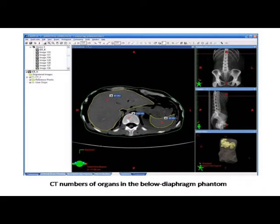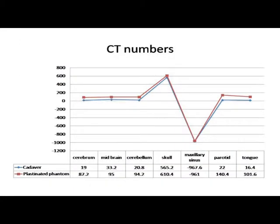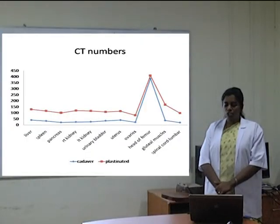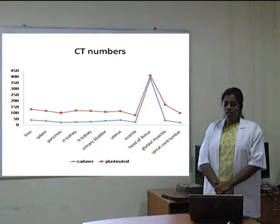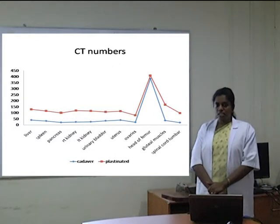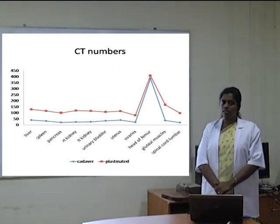The CT numbers of tissues were obtained by taking an average of 5 CT numbers in different places within the same organ. CT numbers were uniformly increased in all tissues in the post-plastinate, but this was minimal in bone and air-filled sinuses, as seen in this graph. The silicone in the tissues has increased the tissue density, which has further increased the CT numbers.